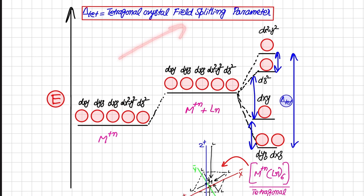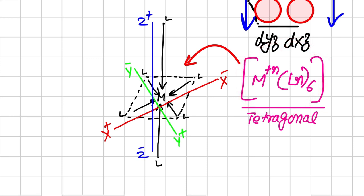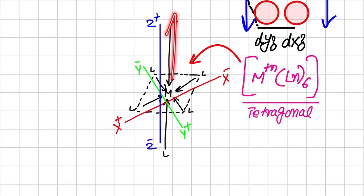In tetragonal geometry there are six ligands, just like in octahedral geometry, but the difference is that in tetragonal geometry the z-axis is elongated — the bond length along z is elongated as compared to the xy bond length. This means the ligands through the z-axis are not coming as close to the metal, so the ligands on the xy plane become more close to the metal.